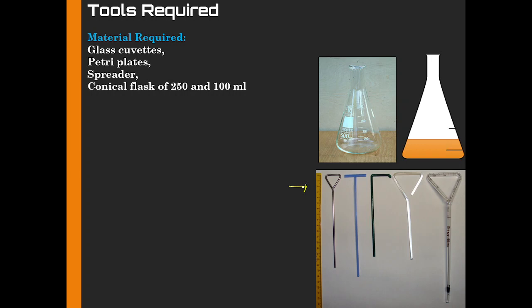This is the conical flask, like 250 ml to 100 ml conical flask is required. Besides this, you also require 50 ml or 15 ml culture tubes which I will show in a minute as well.